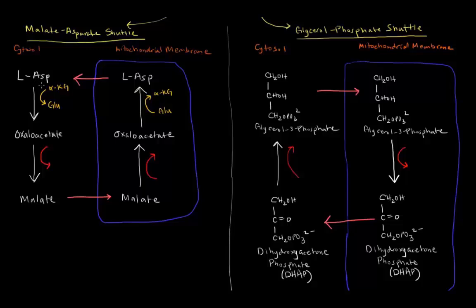we can change that into oxaloacetate via a transamination reaction, taking alpha-ketoglutarate and turning it into glutamate. Ripping the amino group off of L-aspartate and attaching it to alpha-ketoglutarate to make glutamate, resulting in oxaloacetate.